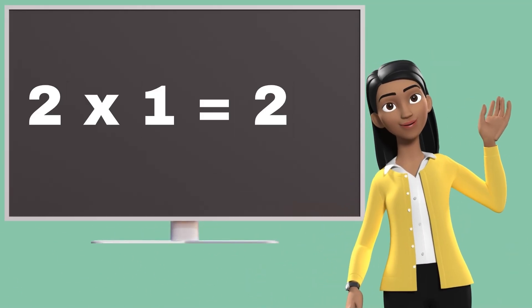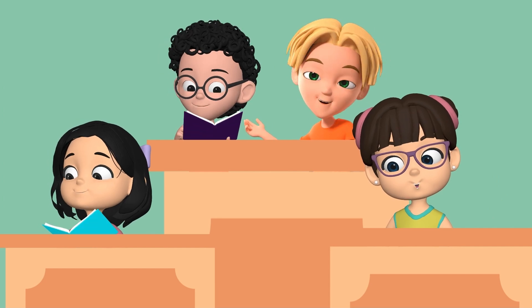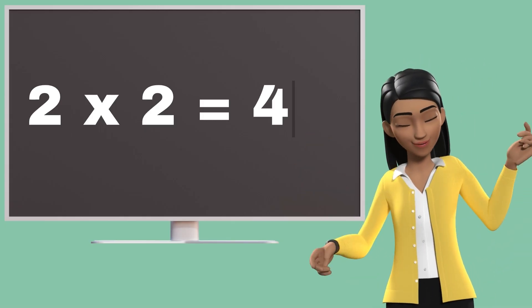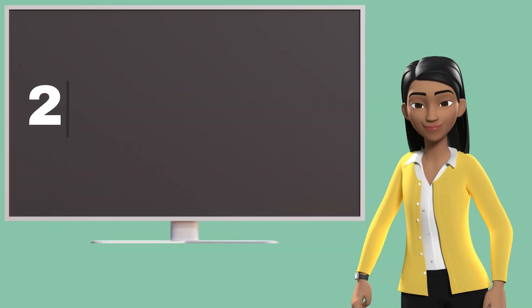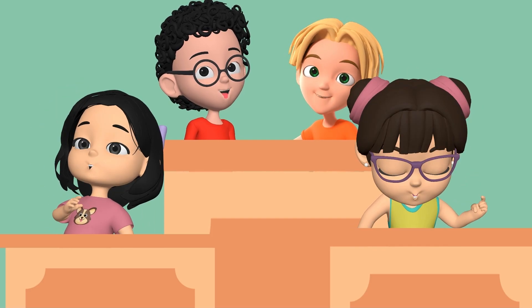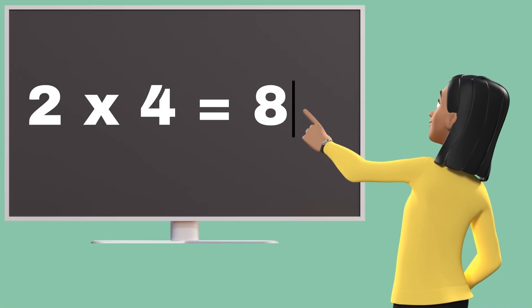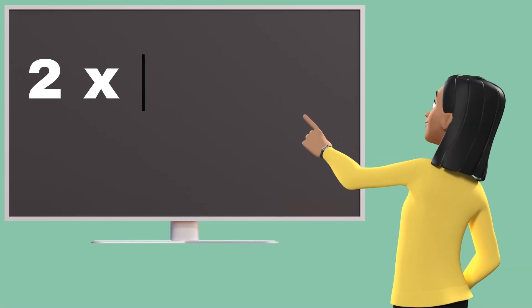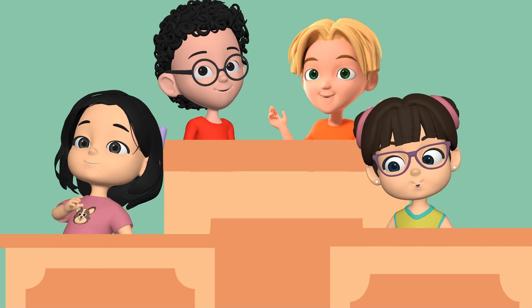Two ones are two. Two ones are two. Two twos are four. Two twos are four. Two threes are six. Two threes are six. Two fours are eight. Two fours are eight. Two fives are ten. Two fives are ten.